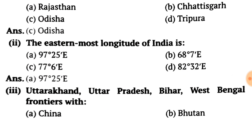The next question is about the easternmost latitude of India — which longitude is the easternmost in our country? The answer is option A: 97 degrees 25 minutes East.